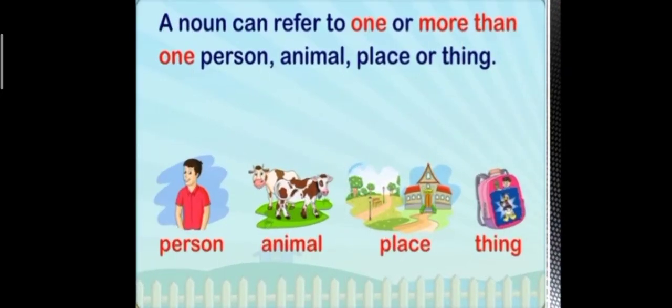Remember what are nouns? Nouns are names of person, animal, place or thing. For example: a boy, cow, a building or a bag.